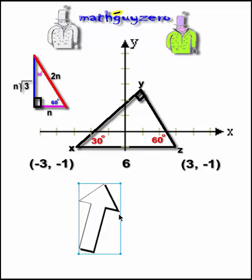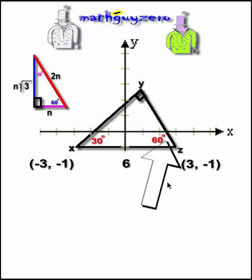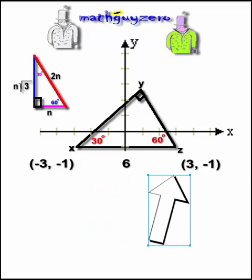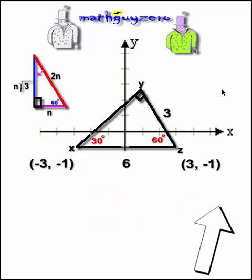So we get the hypotenuse of the big triangle is 6. Therefore, because it's a 30, 60, 90 triangle, we know what the smallest side is over here. It's half of that. That's going to be 3. And we know that last leg is going to be 3 times the square root of 3.